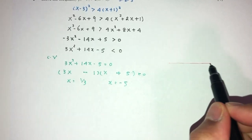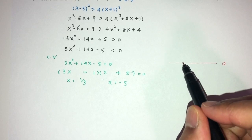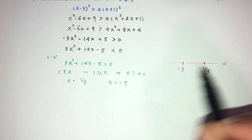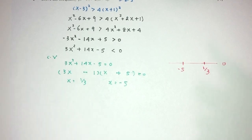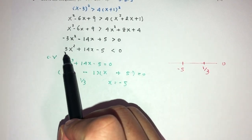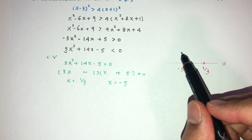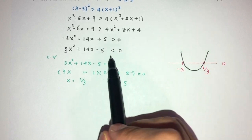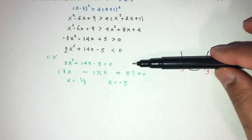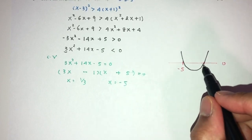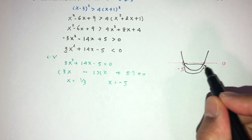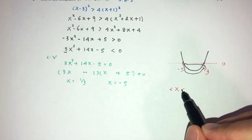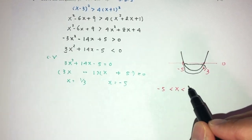Now we use our number line. Here is 0; we have minus 5, obviously before 1 over 3. By observation, since the coefficient of x squared is positive, the graph has a minimum shape. We're trying to find values less than 0, so it will be between those values. x will have to be between minus 5 and 1 over 3.